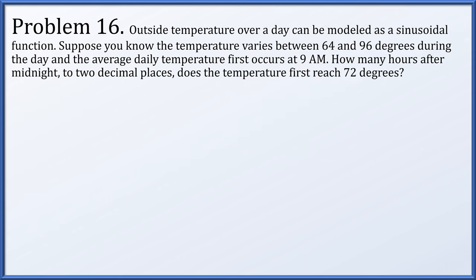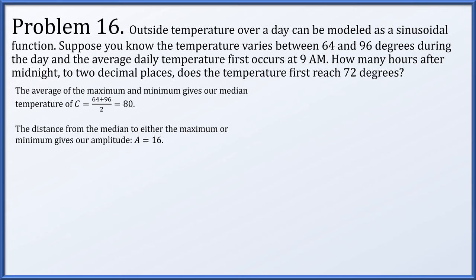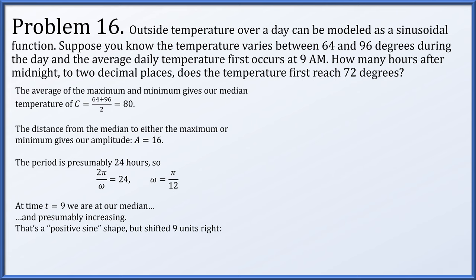Problem 16: outside temperature over the course of a day is modeled as a sinusoidal function. The temperature varies between 64 and 96 degrees, and the average daily temperature first occurs at 9 a.m. The median is 80, the amplitude is 16, the period is 24 hours, giving omega equal to pi over 12. At t equals 9 the temperature is at its median and increasing, so we have a positive sine shape with amplitude 16, period 24, shifted 9 units right, and median 80.